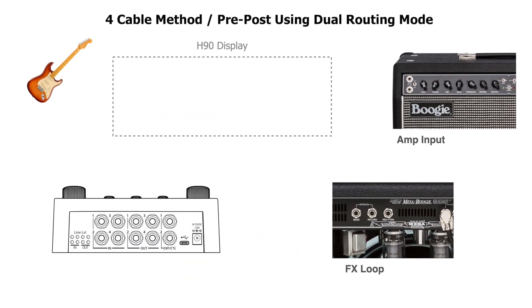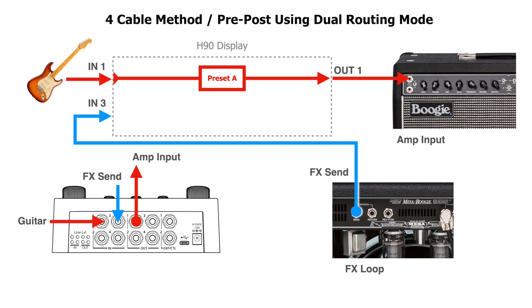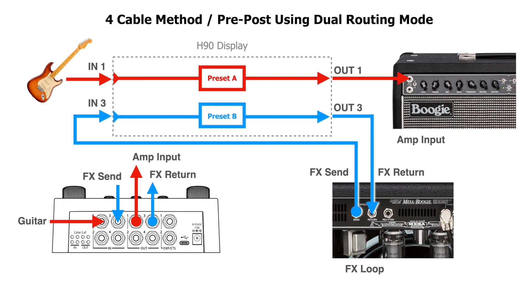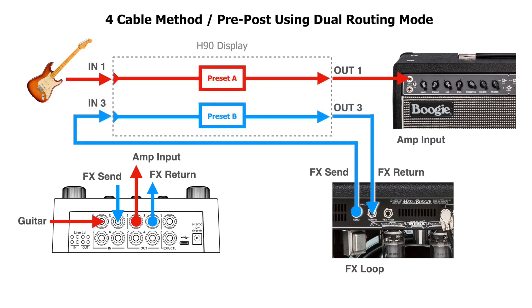To connect to a guitar rig in pre-post using the global dual routing mode: connect the guitar to in 1, from out 1 go to the front of the amp, from the amp's effect send connect to H90's in 3, and from out 3 connect back to the amp's effects return. Path 1 is for algorithms going to the front of the amp, while path 2 is for algorithms placed in the effects loop. It's much easier to envision the H90 as two separate effects pedals, especially when incorporating it into a more complex setup with other pedals.